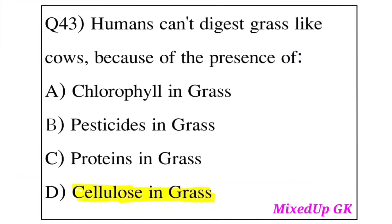Question 43: Humans can't digest grass like cows because of the presence of which substance? Option A: Chlorophyll in grass. Option B: Pesticide in grass. Option C: Proteins in grass. Option D: Cellulose in grass. The answer is Option D, Cellulose in grass. Humans cannot digest cellulose, which is why we cannot digest grass.